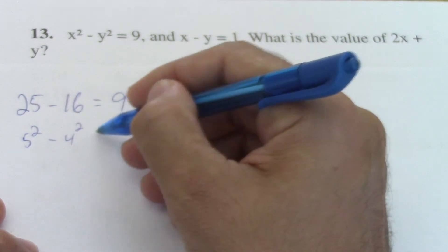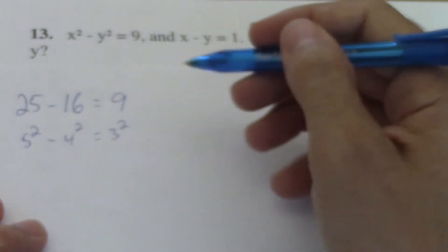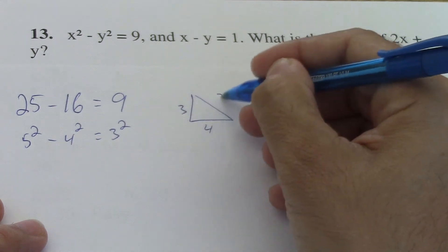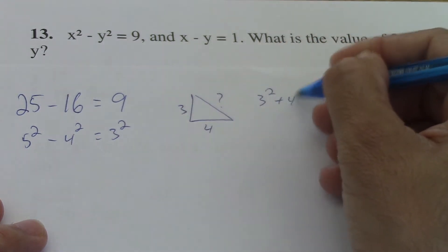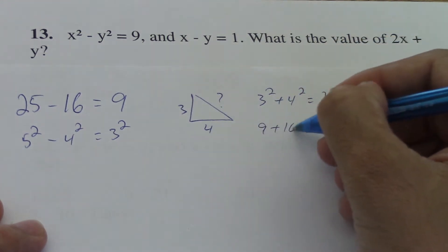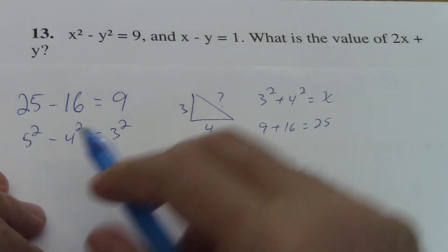And 9 is 3 squared. Usually when you're learning Pythagorean theorem, a teacher goes with 3, 4, and finds this side here, which is 3 squared plus 4 squared equals this side here. This is 9 plus 16, that would be 25. And when we find the square root of that, that would be 5.